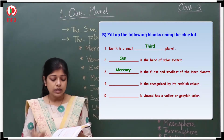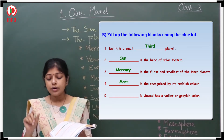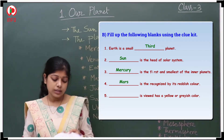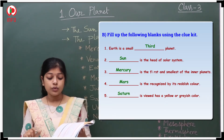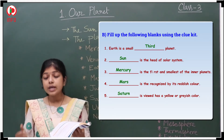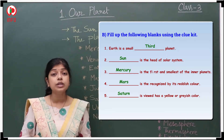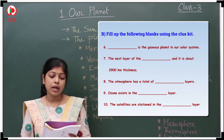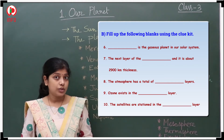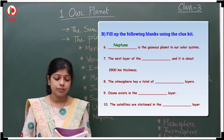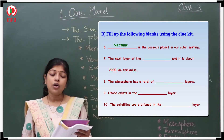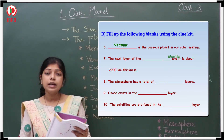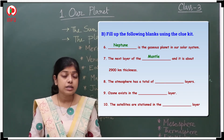Mars is recognized by its reddish color. Saturn is viewed as yellow or grey in color. Neptune is the gaseous planet in our solar system. The mantle is the next layer, about 2,900 kilometers thick.